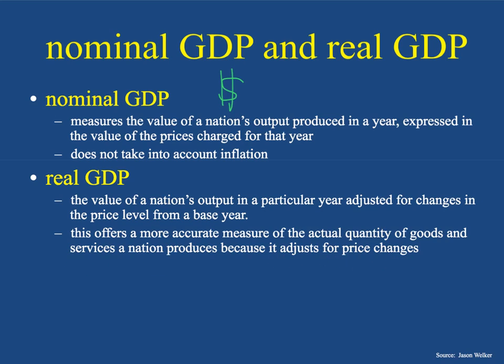Think about it — using the Honda Accord example: in 1985 it was only $10,000, and now it's $30,000. If you just add up those raw nominal numbers, it seems like the United States is booming — it tripled. But not necessarily. It didn't triple in value; it's just the prices that have gone up. So real GDP says, let's get real — what is the actual value if we adjust for inflation?